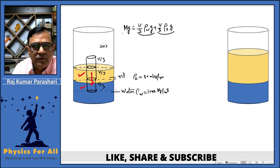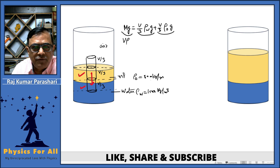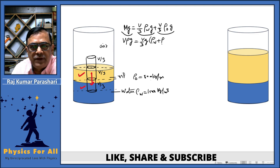This equals the weight of the cylinder, which can be rewritten as V times density of the cylinder times g. This equals V/3 times g, which can be taken as common, times the quantity density of water plus density of oil.